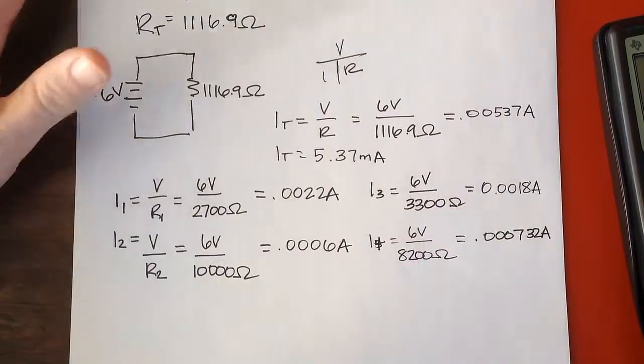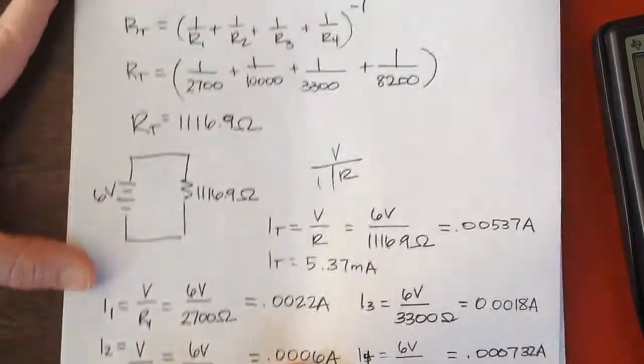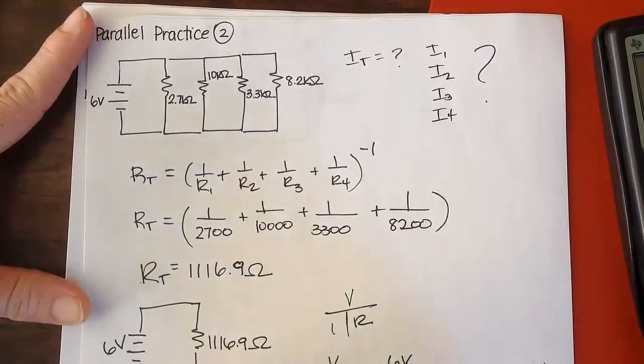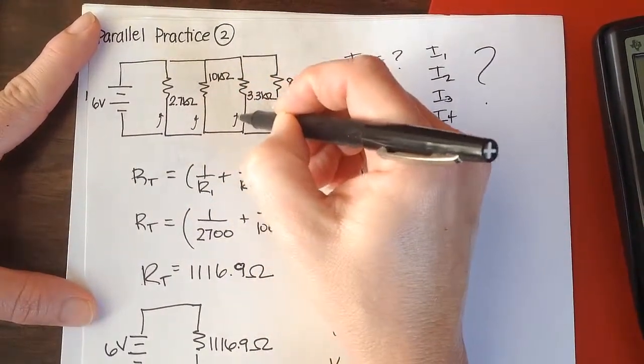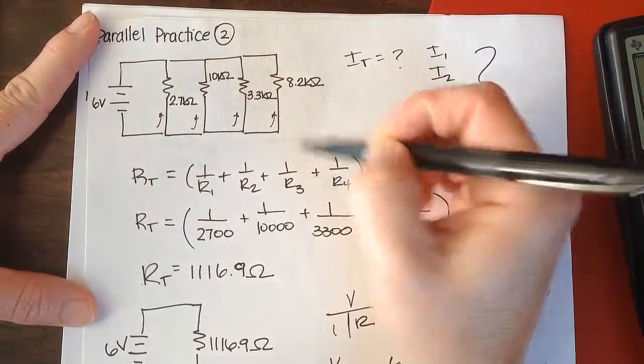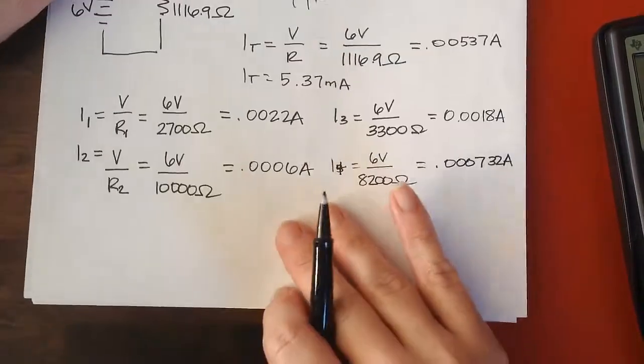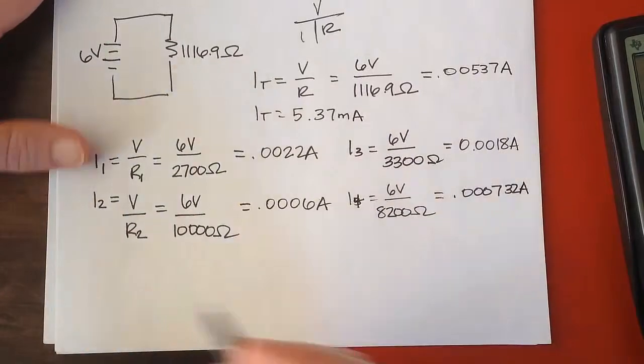Now if I've done everything correctly, what I certainly hope is that the current in each one of these little branches, when I add all four of these up, that I'm going to get the total. So let's check our work that way.